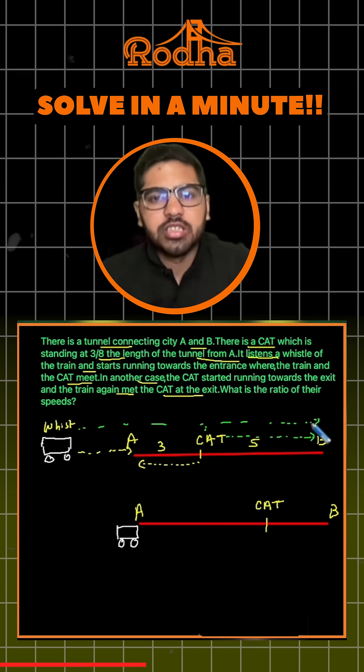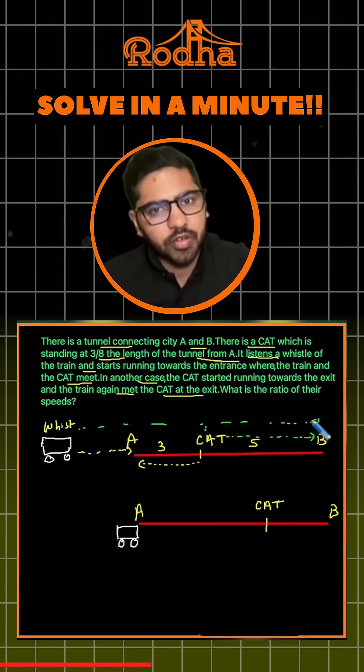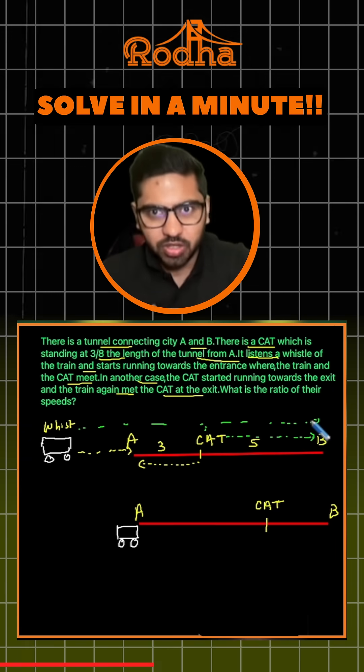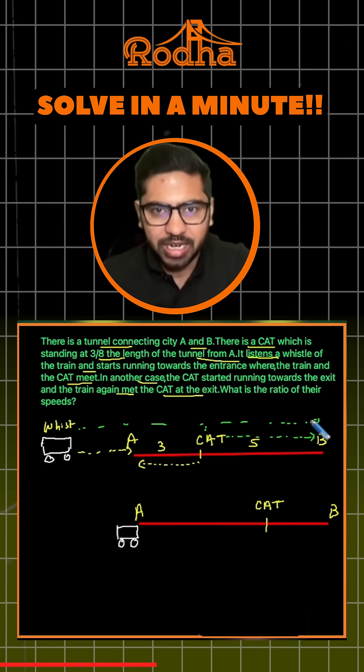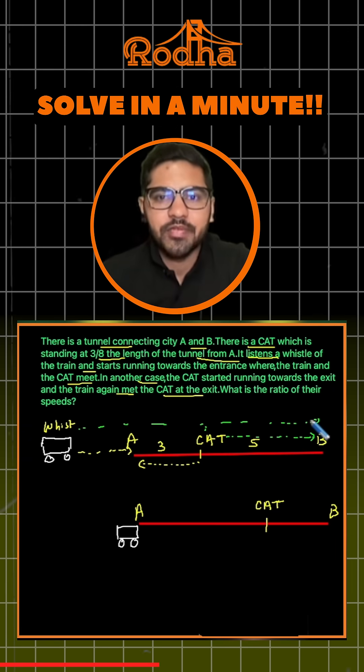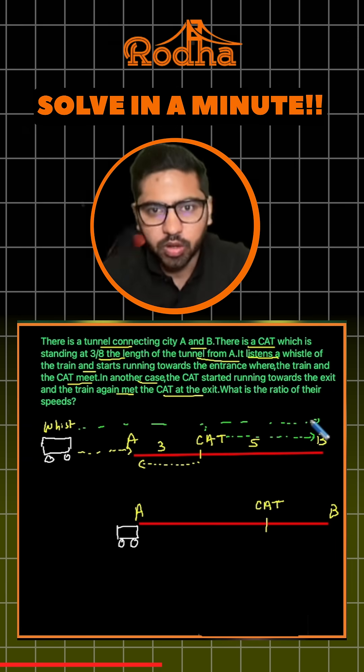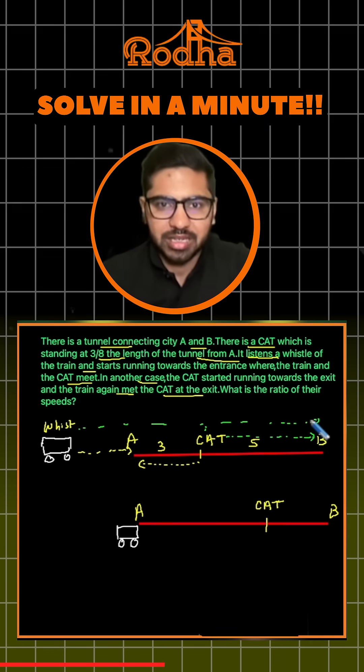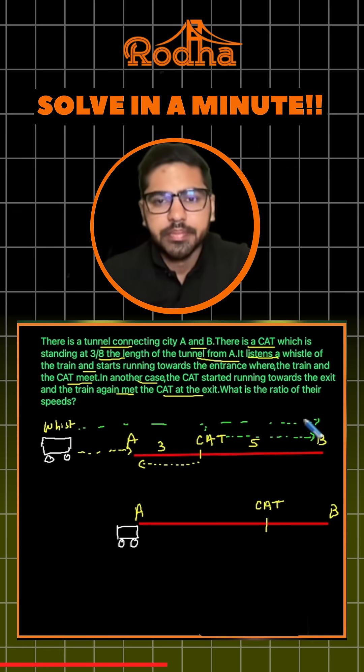If the time is constant, the ratio of distances will be the same as the ratio of speeds. You can visit the link below to understand the concept of proportionality.